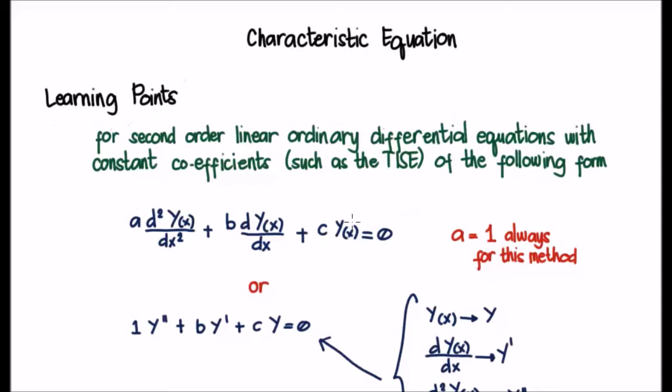The point here is we're talking about a function y which is a function of x. So we have the zeroth derivative, the first derivative and the second derivative. And we have three coefficients a, b and c. Now in order for us to use the characteristic equation the coefficient a must always be equal to 1. So that means if you want to use the characteristic equation and a is not equal to 1 you must divide across by a.